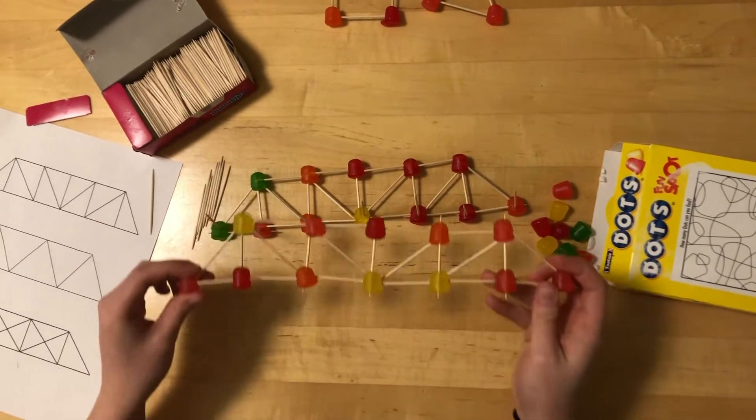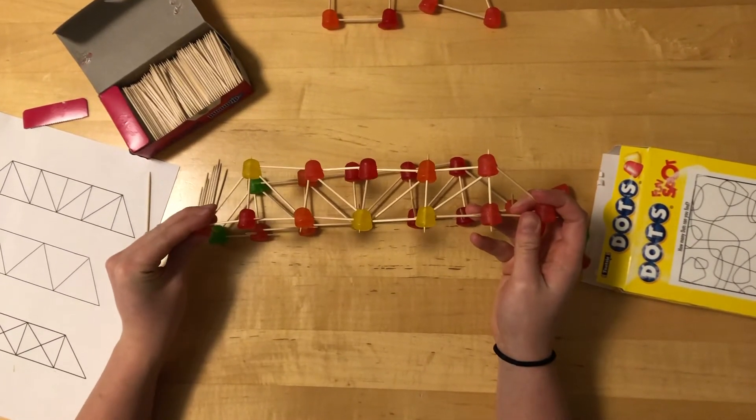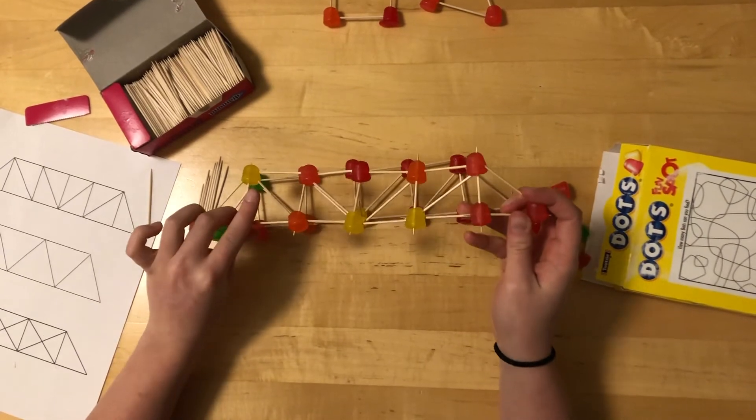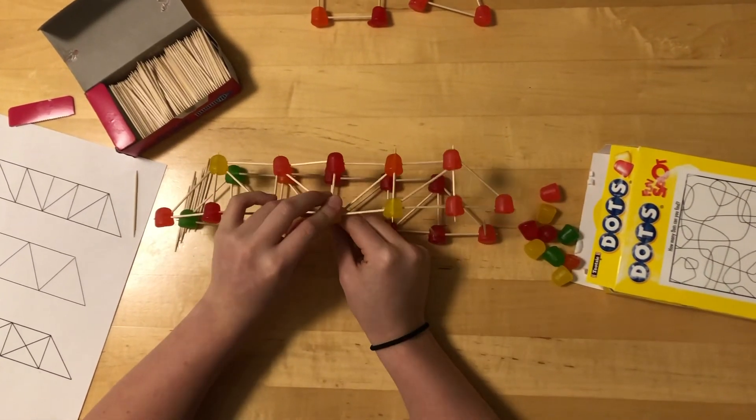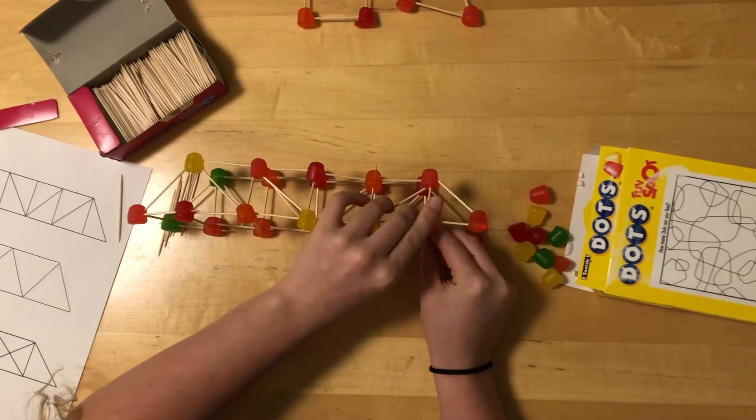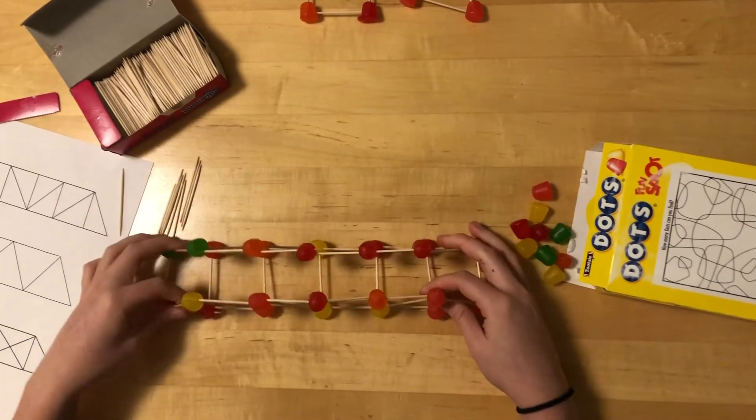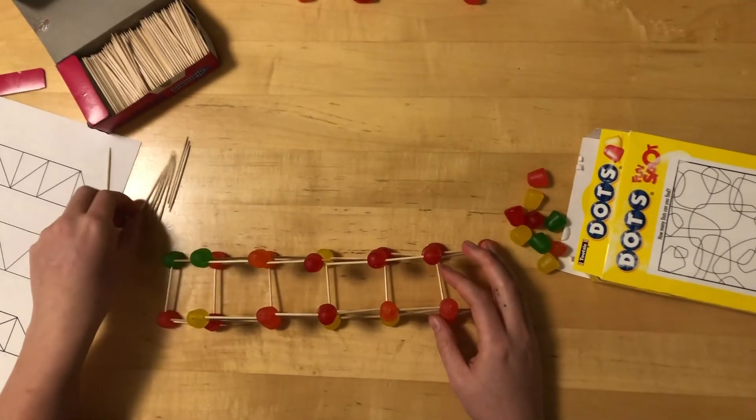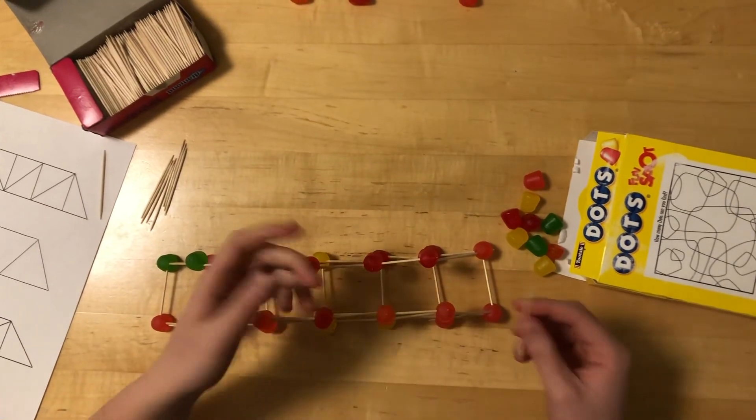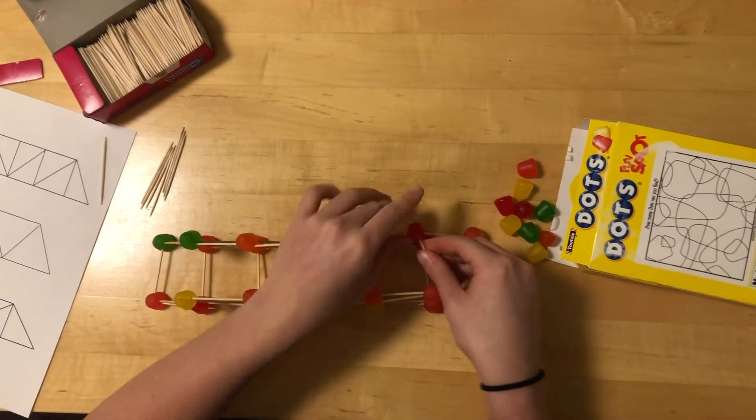Now we're going to take the second side and stick the bottom gumdrops onto the toothpicks. And now we have the completed bridge. Some kids will choose to connect the top gumdrops as well, which adds to the stability.